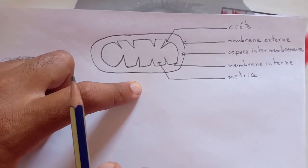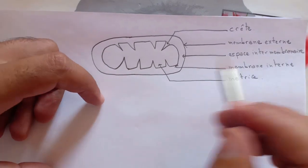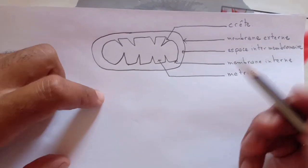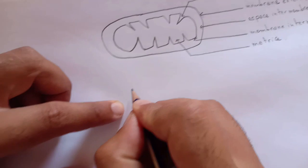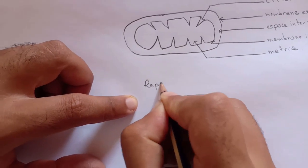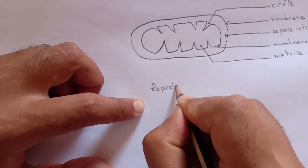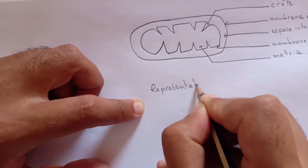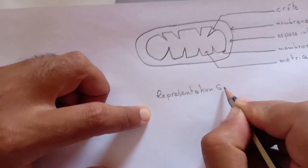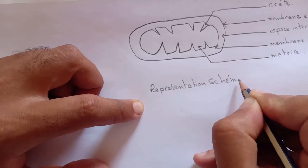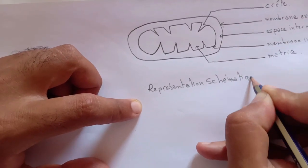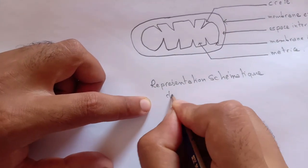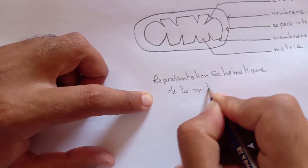Maintenant, il ne manque uniquement la légende ou bien le titre. Donc, je vais faire le titre. Ça, c'est une représentation schématique de la mitochondrie.